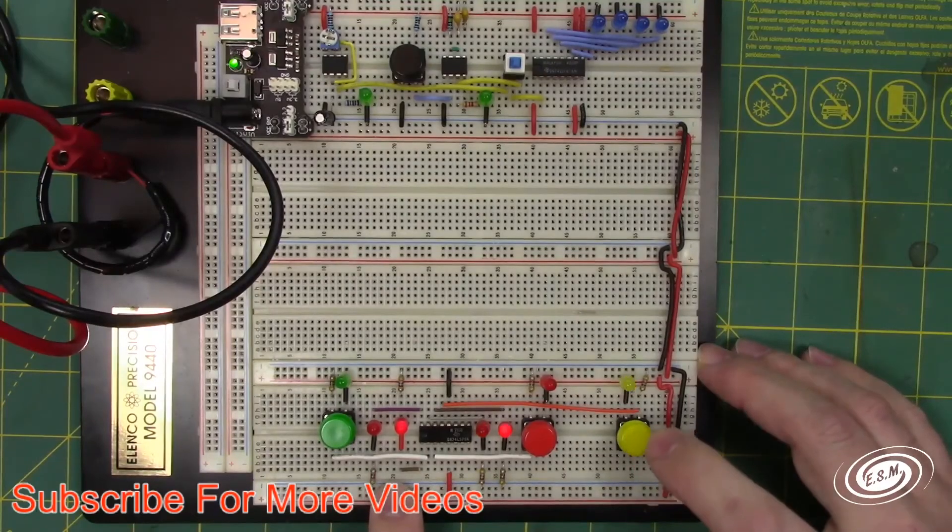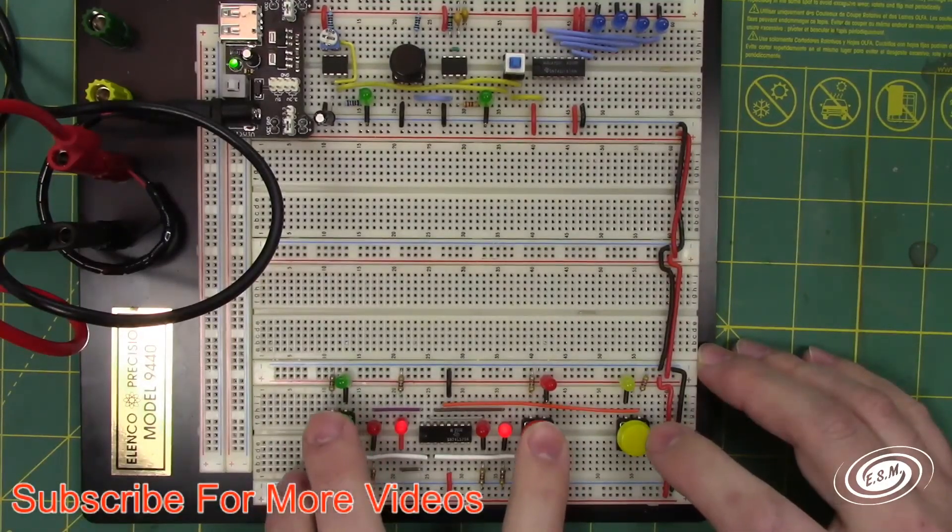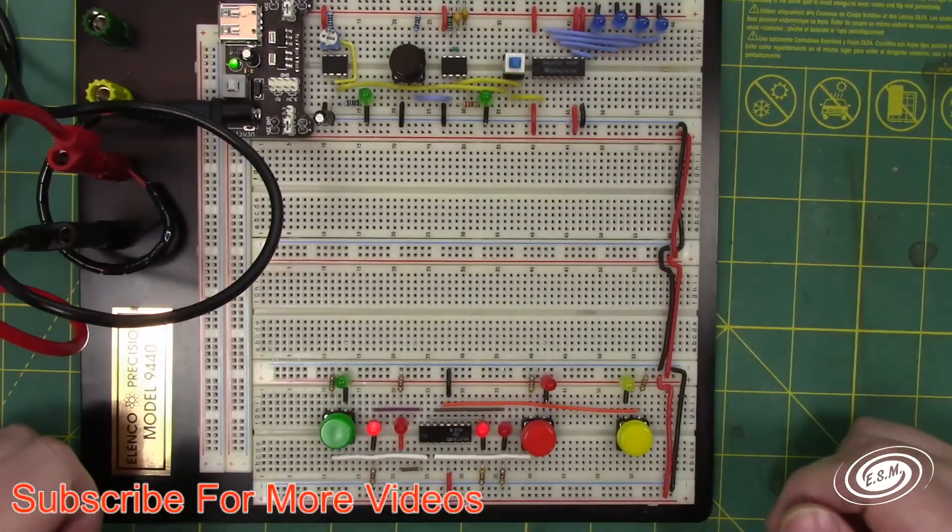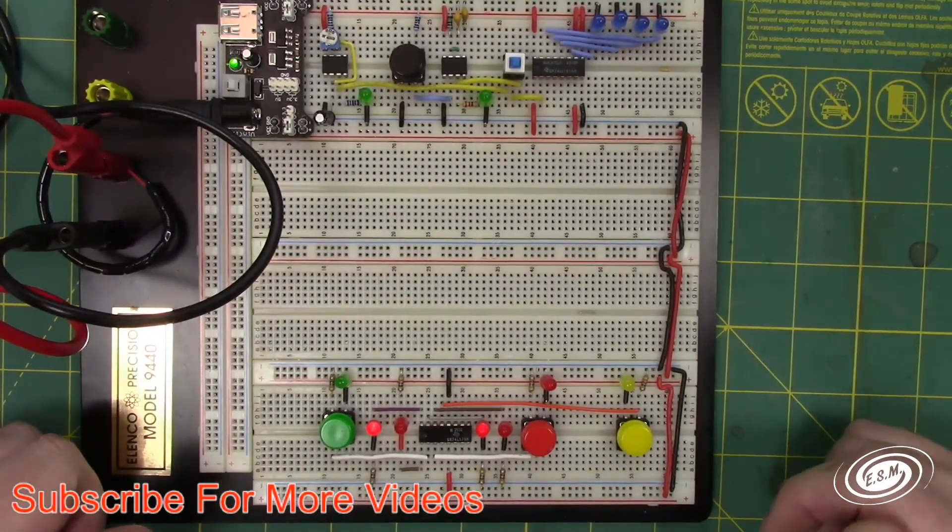So if I want them both to latch, I'll clear it out. If I want them both to latch, I hold them both down and I pulse it, and they're both storing that one bit of data.